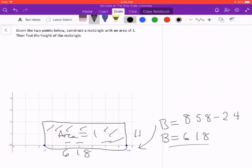We don't know this height. That's what we're looking for. But we do know the area is 1. So remember, area of the rectangle is equal to base times height.